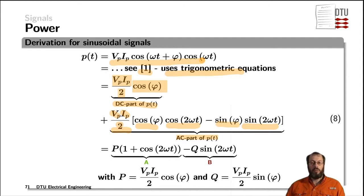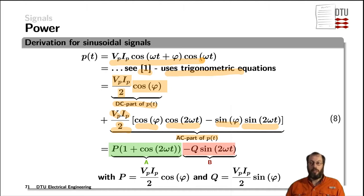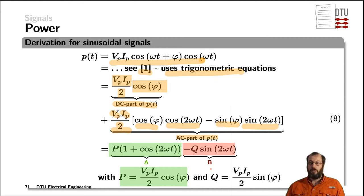The phase phi represents the difference on the time axis between the zero crossing of the voltage and the zero crossing of the current. We can further rewrite this equation with the part A defined as P times one plus the cosine of twice the frequency, minus Q times the sine wave of twice the frequency. In this case, P is a redefinition of the amplitudes of voltage and current multiplied together and divided by a factor of two times the cosine of that phase phi. The Q part of the power has the same amplitude but multiplied by the sine of the voltage and current phase difference.